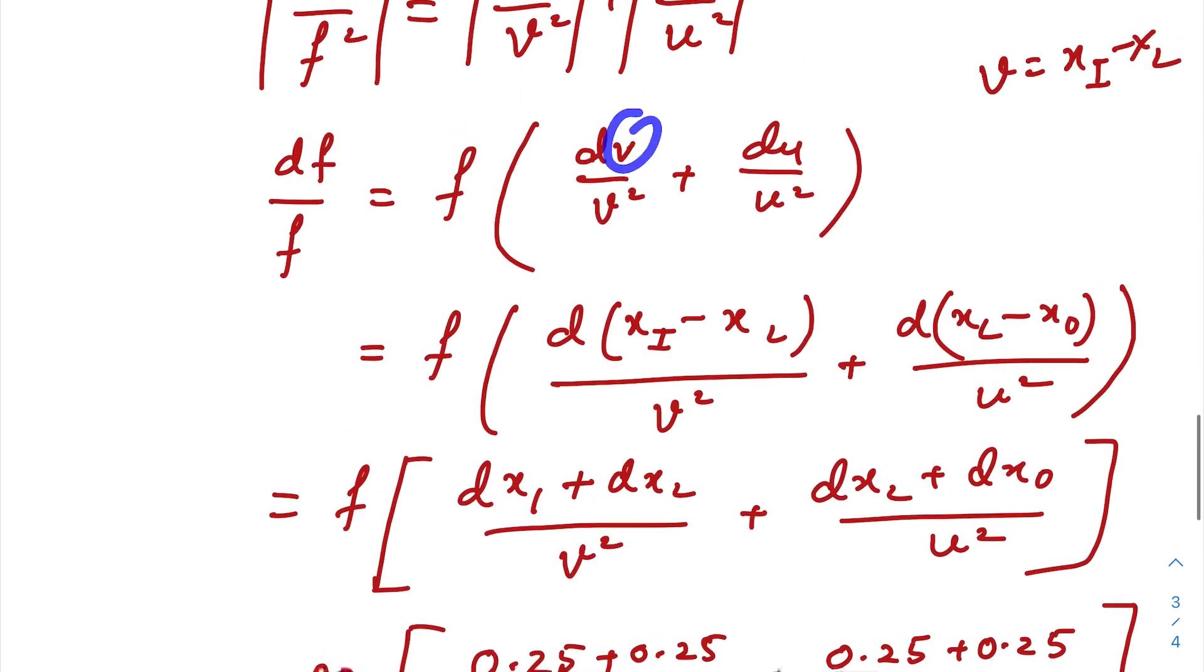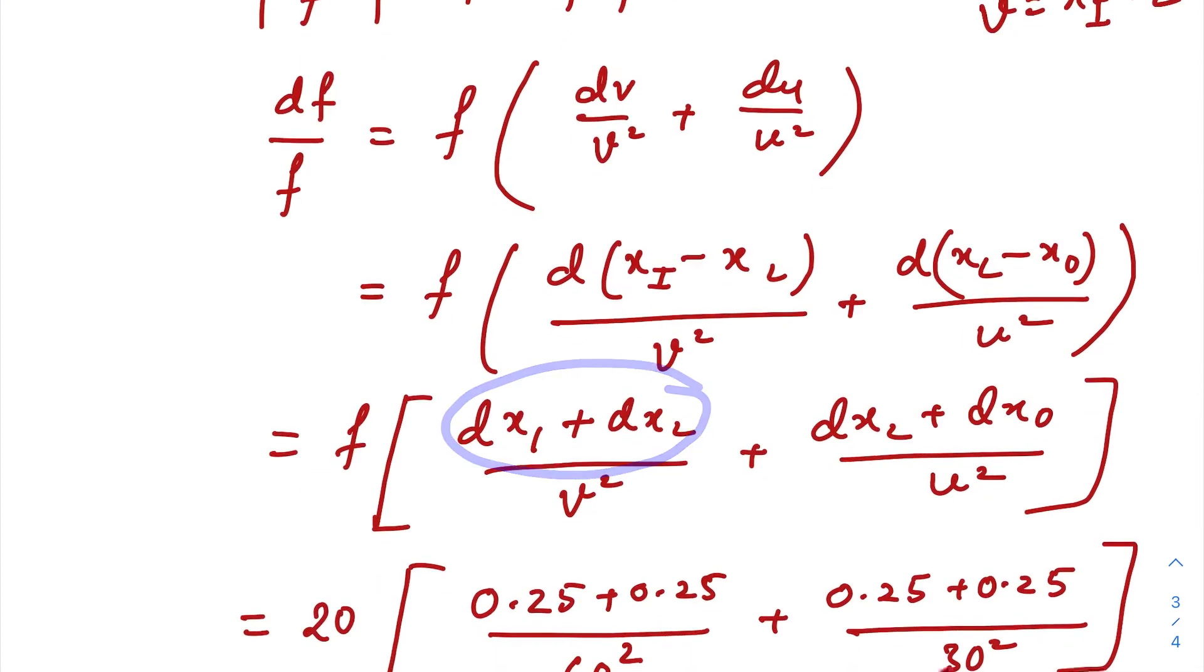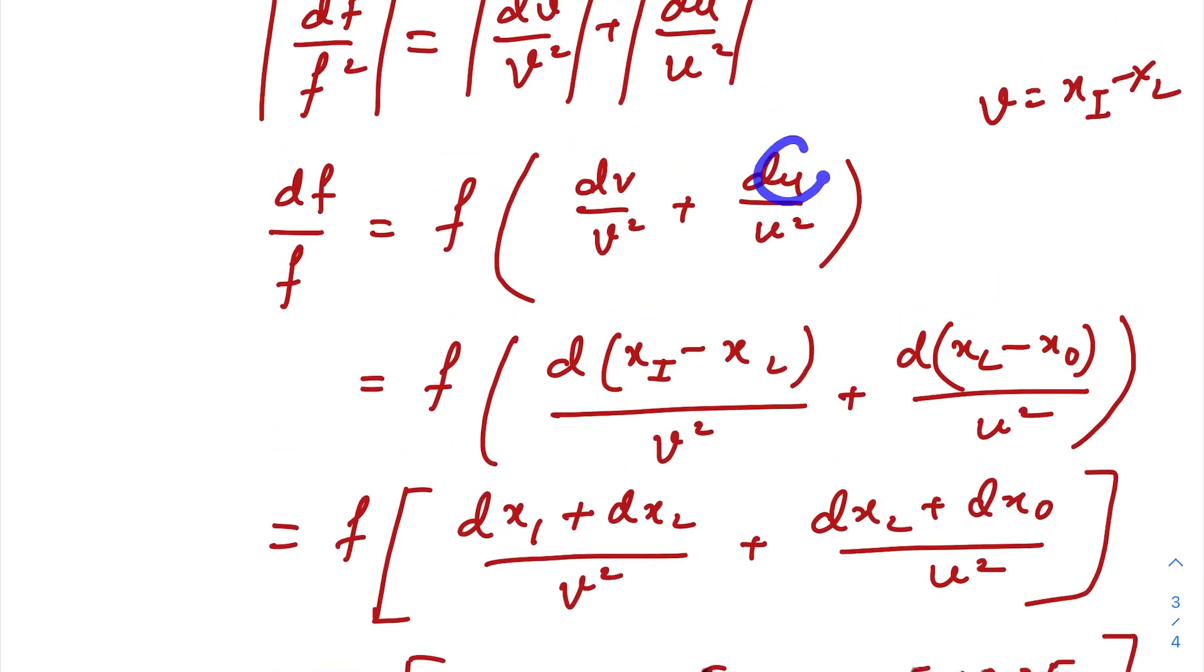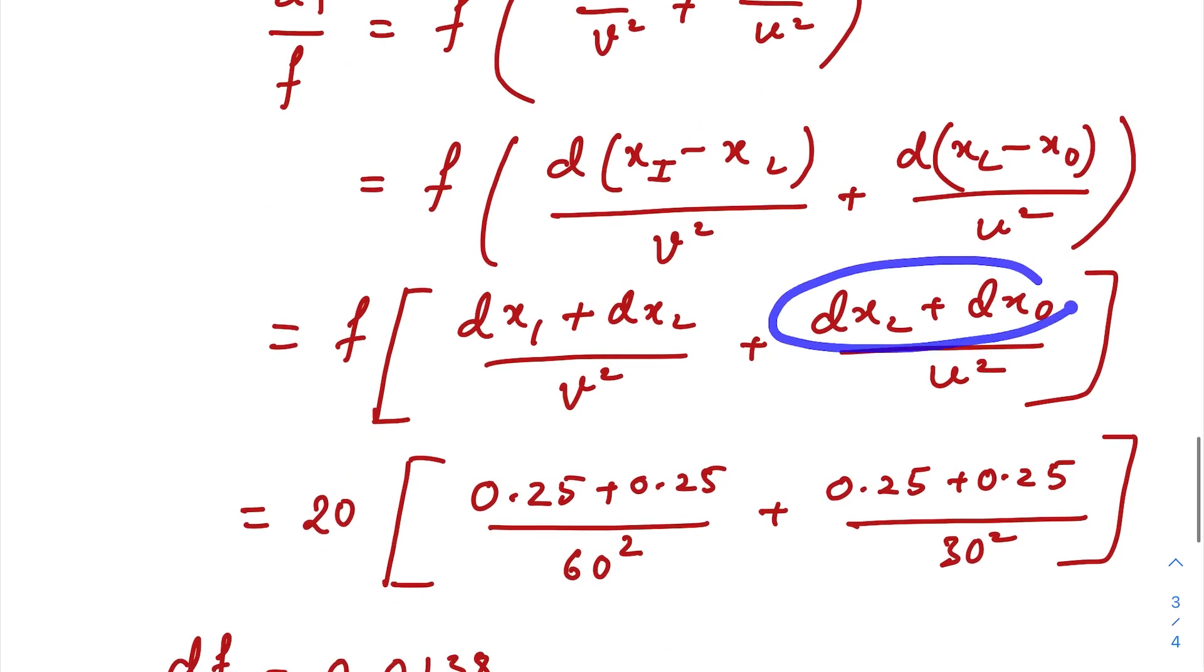In the case of v, we need to check x_i and x_l, so we will get two errors. As you can see here, similarly while measuring u, you need to take two readings of x_l and x_o. Again you will get two errors, separate errors, and those errors will get added up. Just converted this minus to plus.